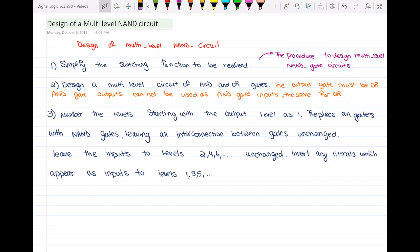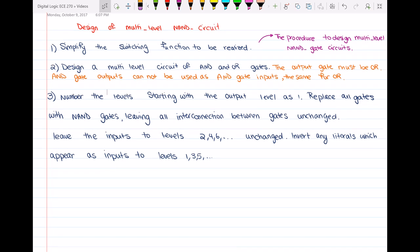So what you have to do is first realize your function and simplify that switching function. Then design the multi-level circuit with AND and OR gates. You're not doing anything other than designing the circuit using AND and OR gates.